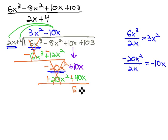40 plus 10 is 50x. We still have another term to bring down, so we can repeat the process, bringing down the positive 103.